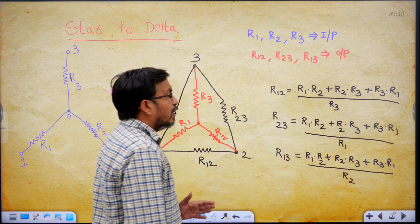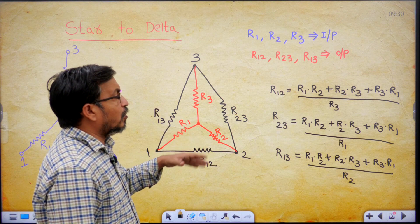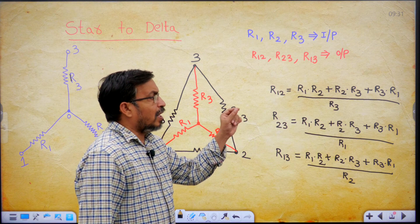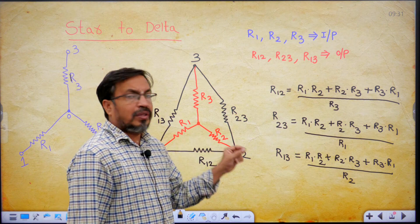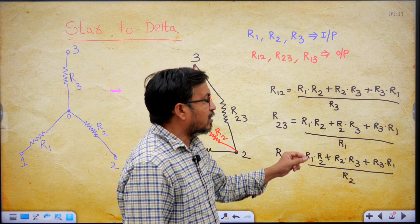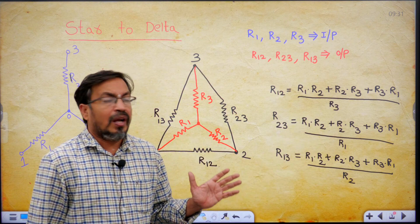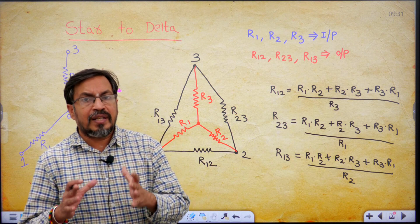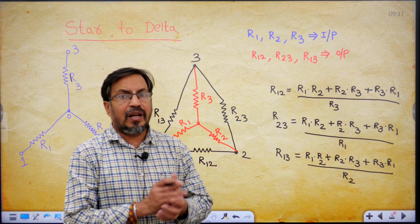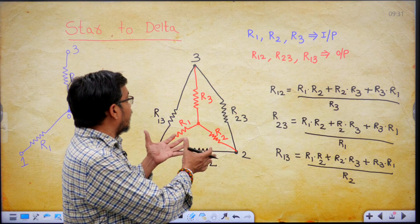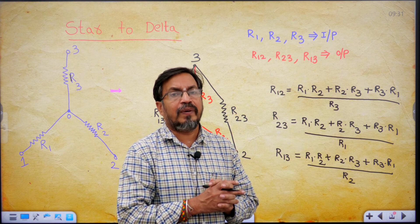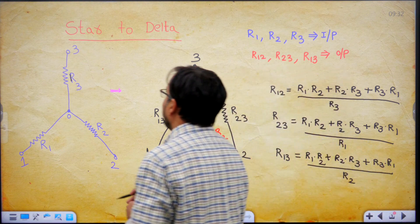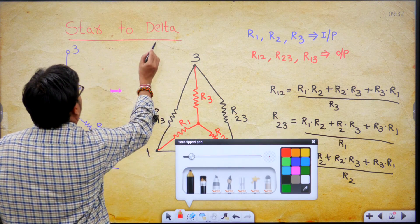So if a star network is given and you want to convert it into delta equivalent, the formulas are: R12 equals R1·R2 + R2·R3 + R3·R1 divided by R3; R23 equals R1·R2 + R2·R3 + R3·R1 divided by R1; R13 equals R1·R2 + R2·R3 + R3·R1 divided by R2.